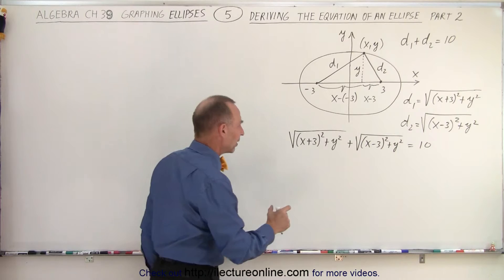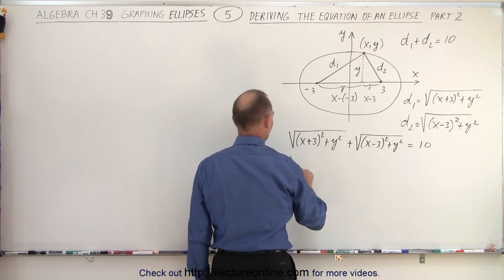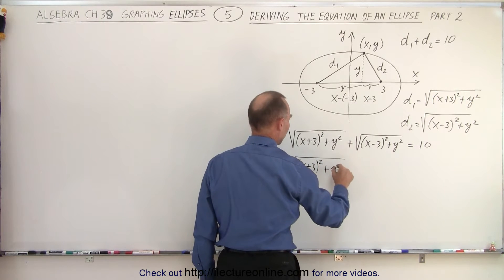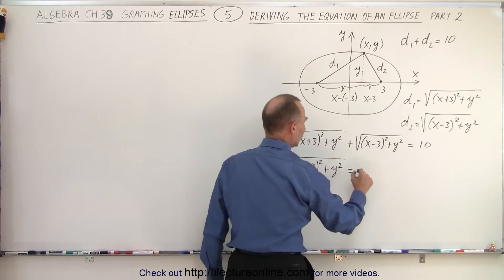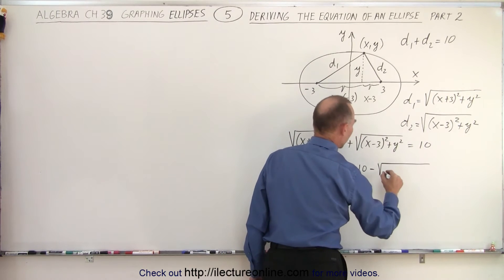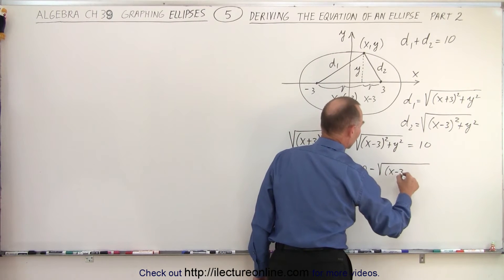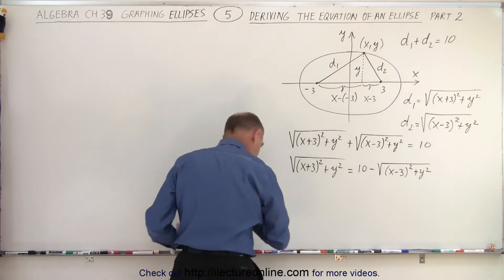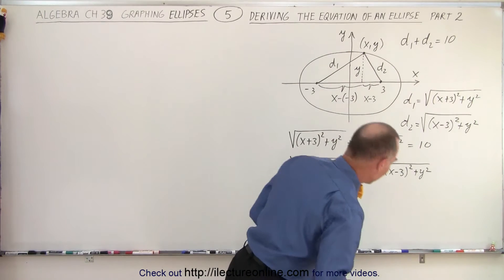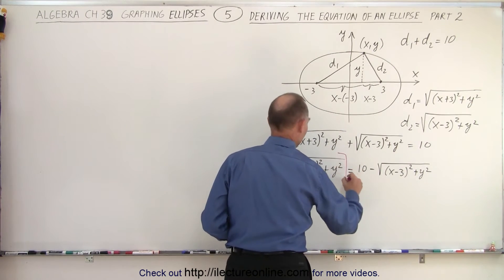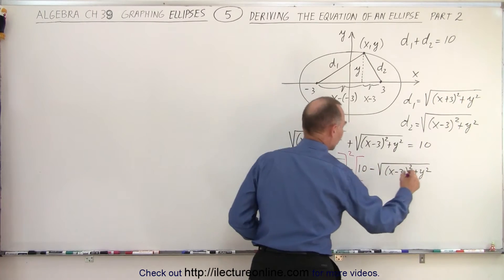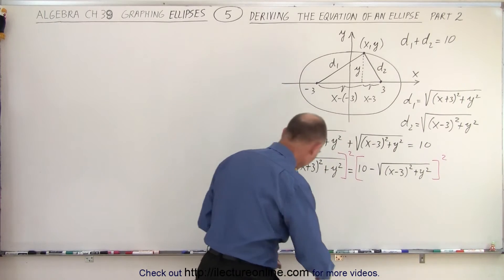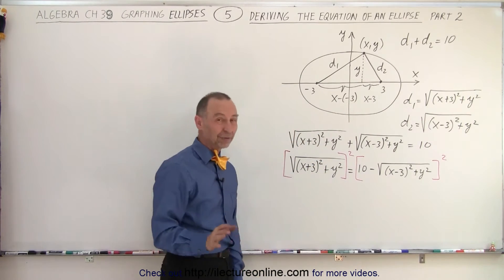So therefore we can say that the square root of x plus 3 squared plus y squared, plus the square root of x minus 3 squared plus y squared must equal 10. From that, we should be able to get the equation of the ellipse. First we need to separate the radicals, so let's move one to the other side. We end up with the square root of x plus 3 quantity squared plus y squared is equal to 10 minus the square root of x minus 3 squared plus y squared. Now we can go ahead and square both sides — we'll probably have to do it twice.